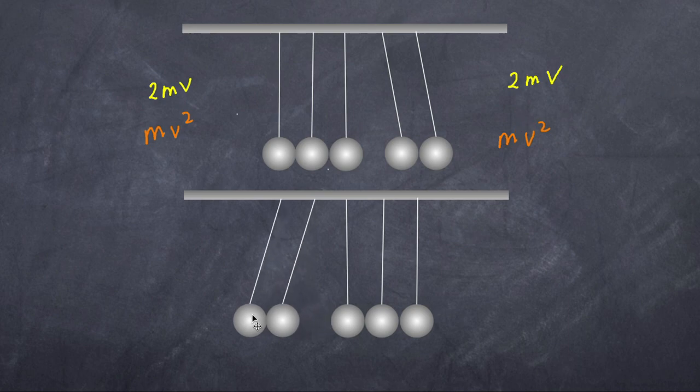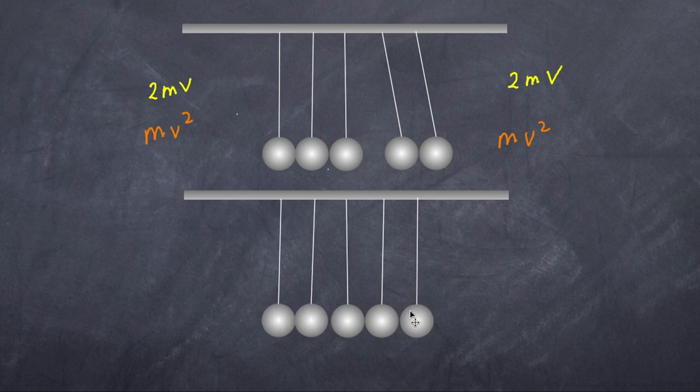We now have here two balls going in but we have now one ball coming off. What does that mean? Let's first look at the terms of the momentum.